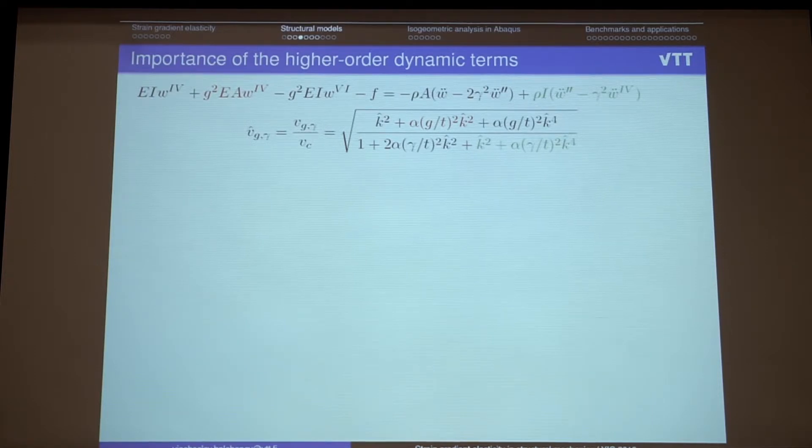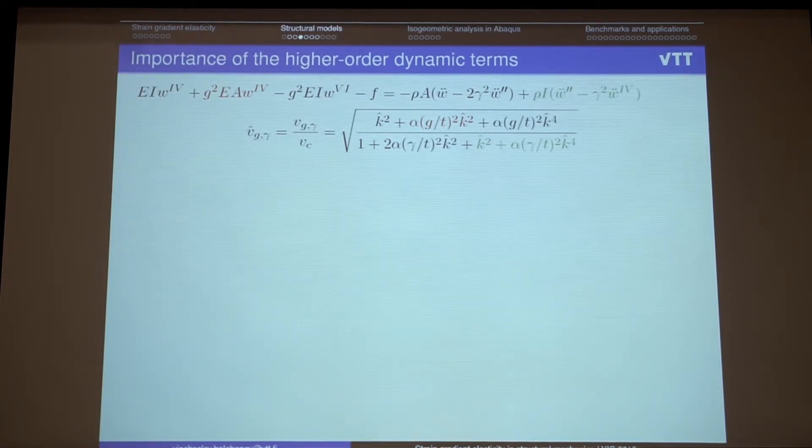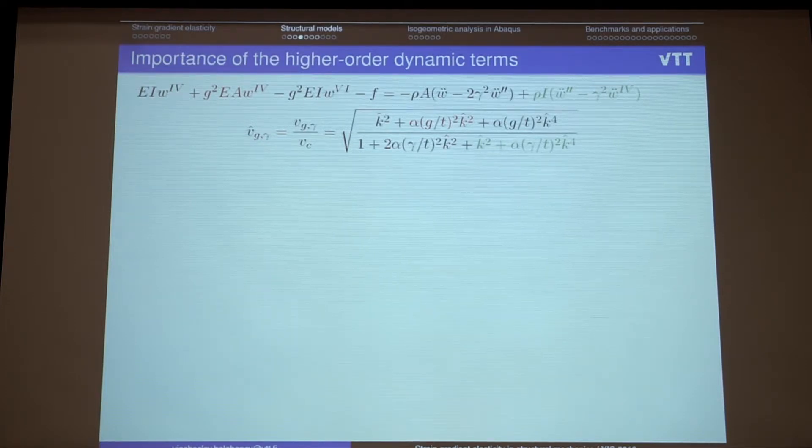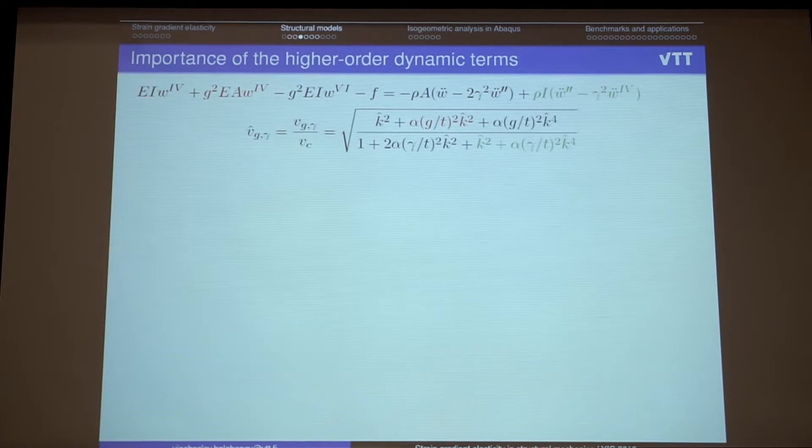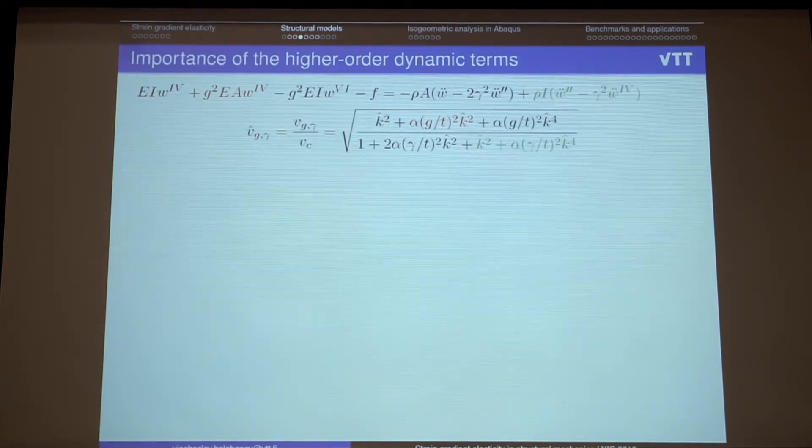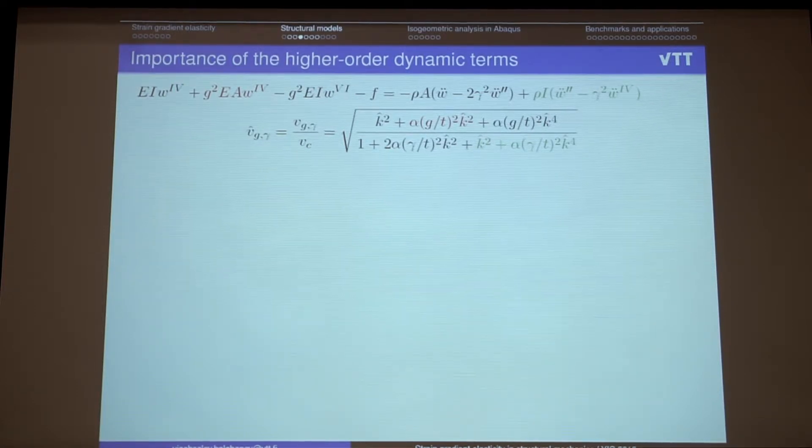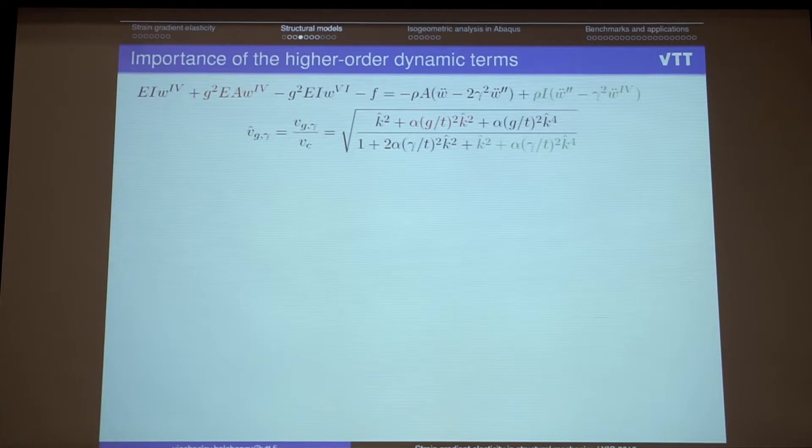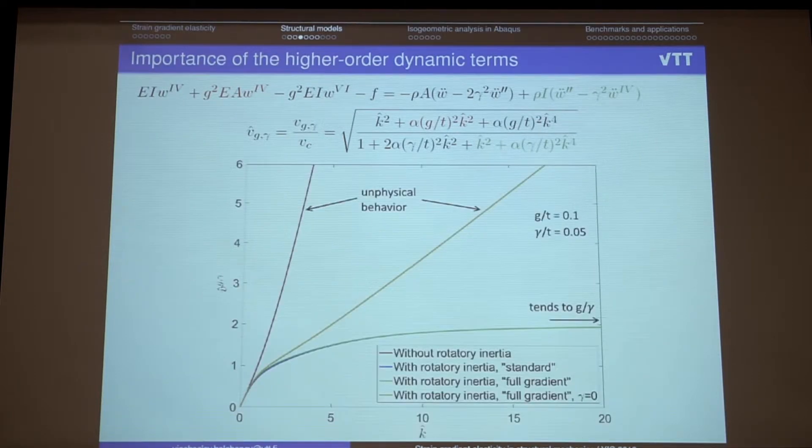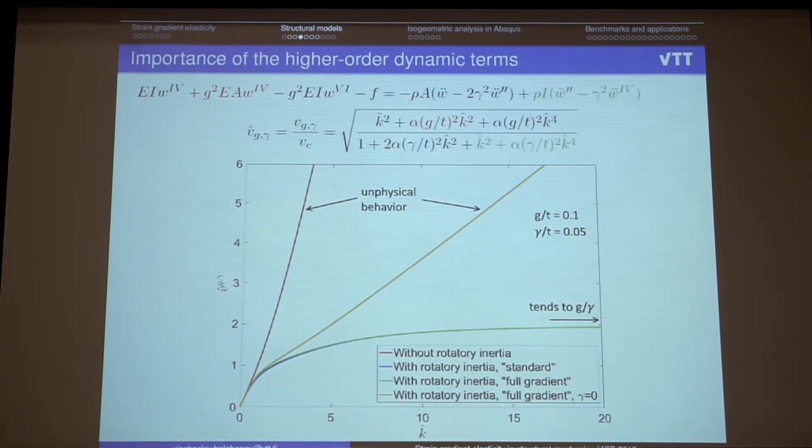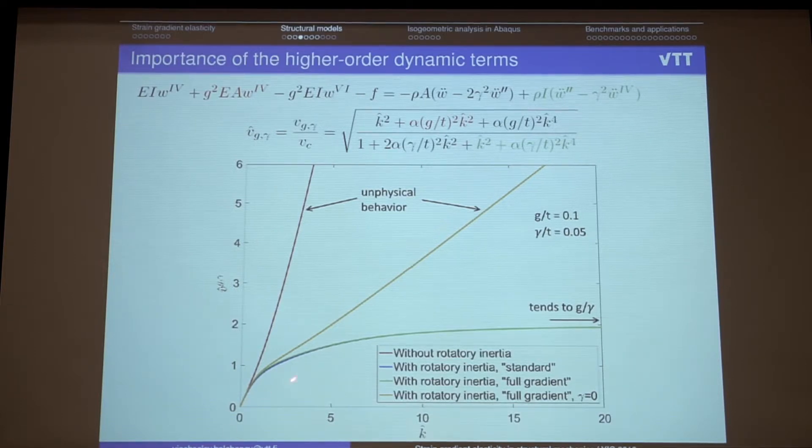Another, again, back to the Euler-Bernoulli beam model. Another term which, now we work with a dynamical equation. And also there is Euler-Bernoulli Rayleigh model. Which takes into account the rotatory inertia term. And it's shown that only if we take into account these terms we have physical behavior of the phase velocity. And also for the gradient elasticity we have higher order term. Which should be taken into account if we want to have the phase velocity tends to some finite value.